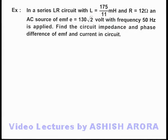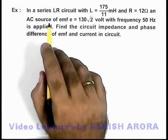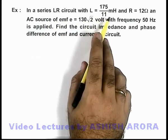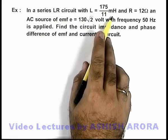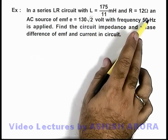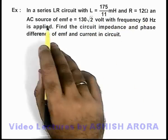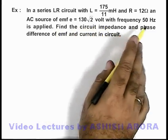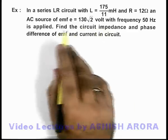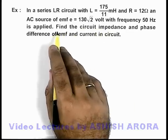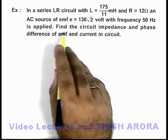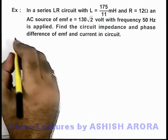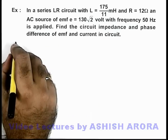In this example we are given a series LR circuit with L as 175/11 millihenry and resistance 12 ohm, and an AC source of EMF 130√2 volt with frequency 50 hertz is applied. We are required to find the circuit impedance and phase difference of EMF and current in the circuit.